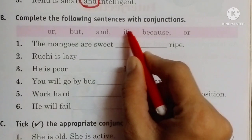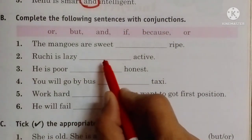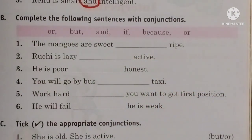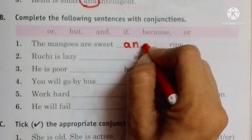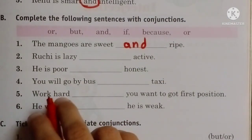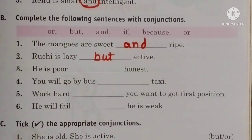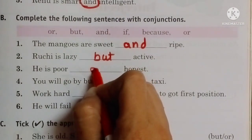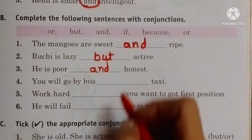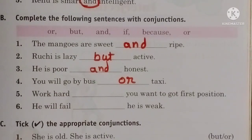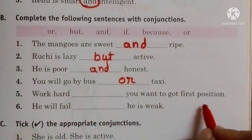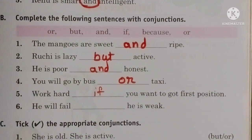Complete the following sentences with conjunctions. The mangoes are sweet and ripe. Ruchi is lazy but active. He is poor and honest. You will go by bus or taxi. Work hard if you want to go to first position. He will fail because he is weak.